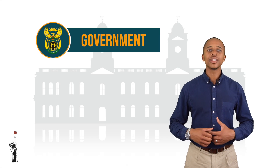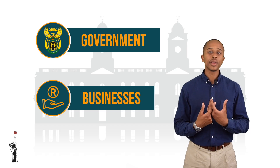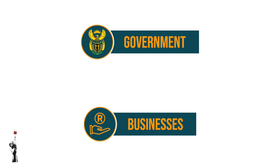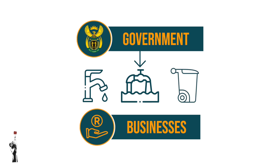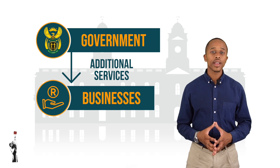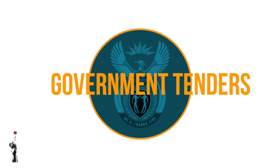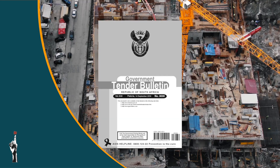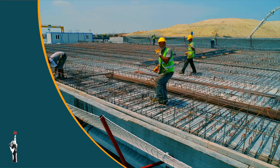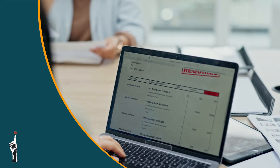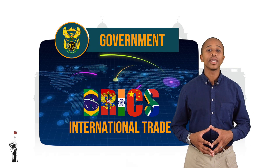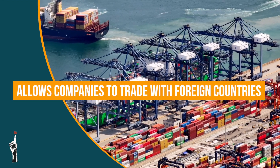Just as the government provides services to households, they also provide services to businesses such as water supply, sanitation, and disposal. There are also additional services the government provides to businesses, such as government tenders. For example, a construction company can receive a tender to build municipal roads or buildings and in return gain an income. The government also plays a major role in facilitating trade with the international community, allowing companies to trade with foreign countries.